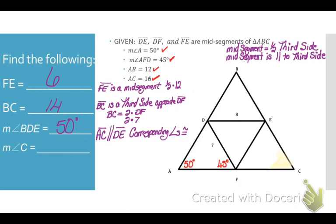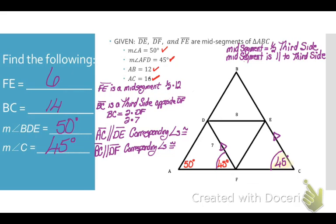Now let's look at angle C. I know that side BC and DF are parallel because DF is a mid-segment. Corresponding angles formed by a transversal through these two parallel lines are congruent, and angle AFD and angle C are corresponding angles. Therefore, angle C equals 45 degrees. If you're struggling, you can isolate just those two lines and the transversal to see clearly that they are corresponding angles.